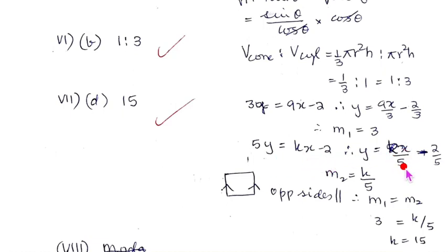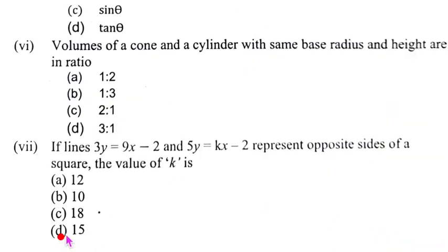The second line is 5y equal to kx minus 2. Take this 5 that side so that you can convert y is equal to mx plus c. So it will be kx upon 5 here and minus 2 upon 5. Now k upon 5 becomes the slope of the second line. Now opposite sides are parallel. So m1 and m2 will be equal. So 3 is equal to k upon 5, cross multiply k equal to 15 which is option D.